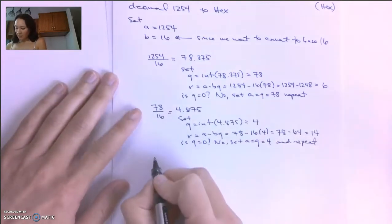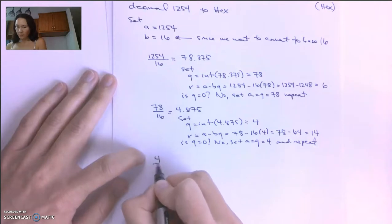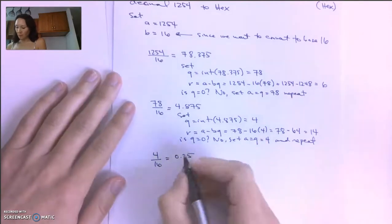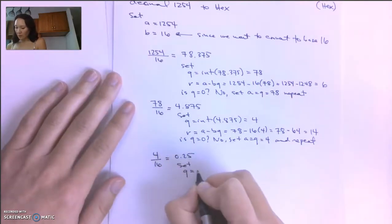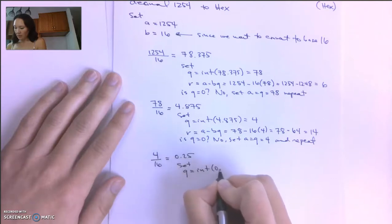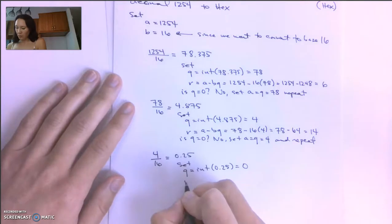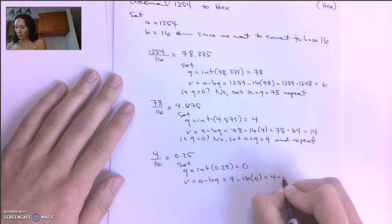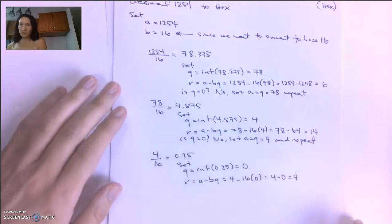Great, so now A is 4. We take 4 divided by 16, and we get 0.25. We'll set Q equal to the integer part of 0.25, so that's equal to 0. We'll set R equal to A minus BQ, which is 4 minus 16 times 0, or 4 minus 0 equals 4.